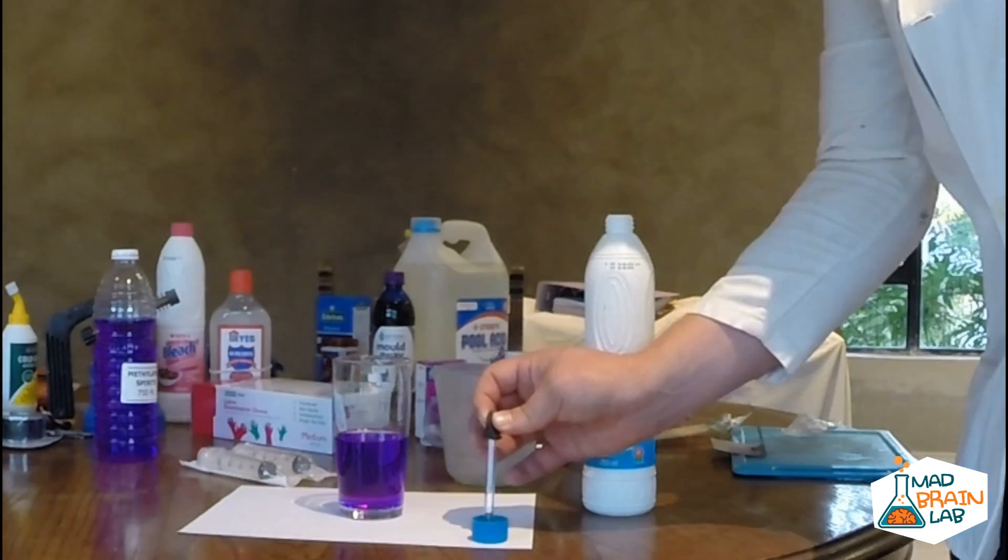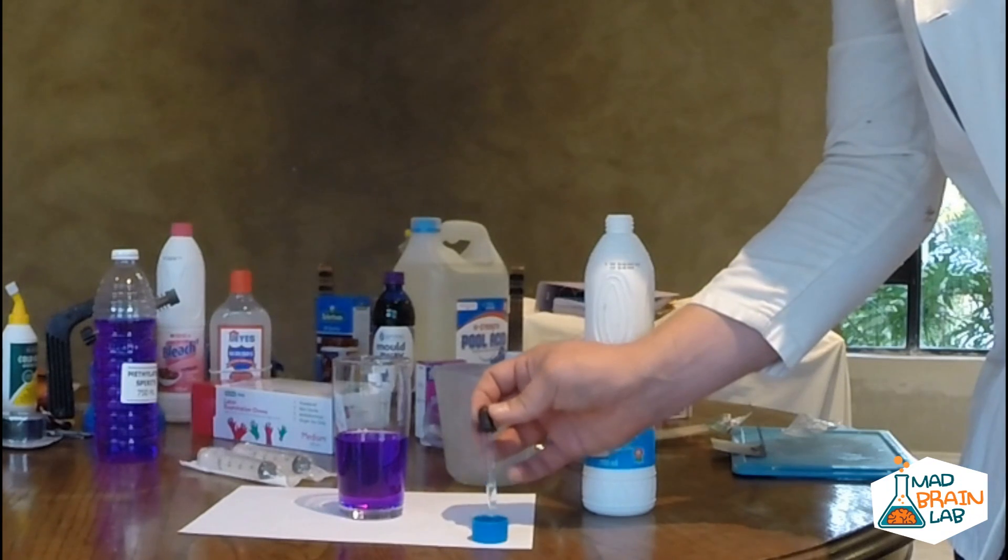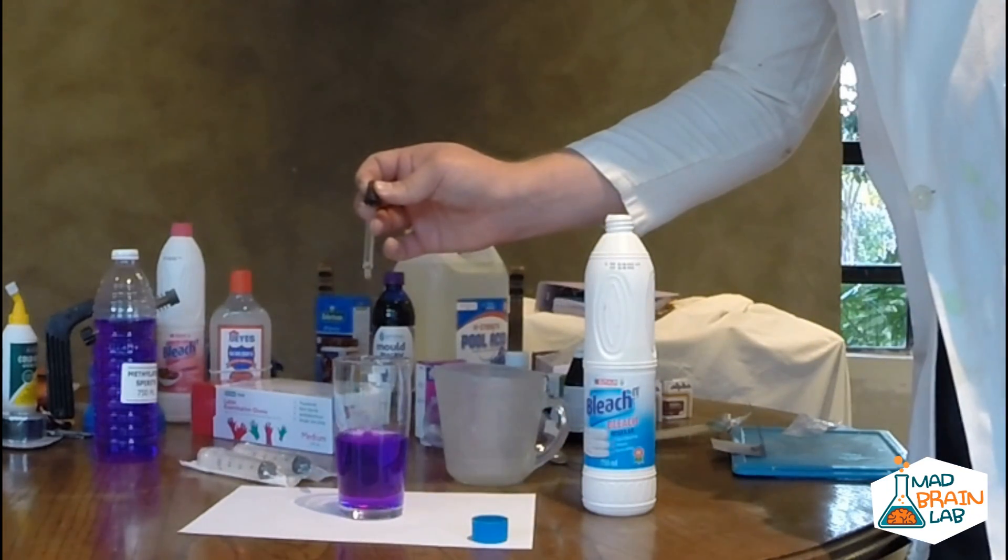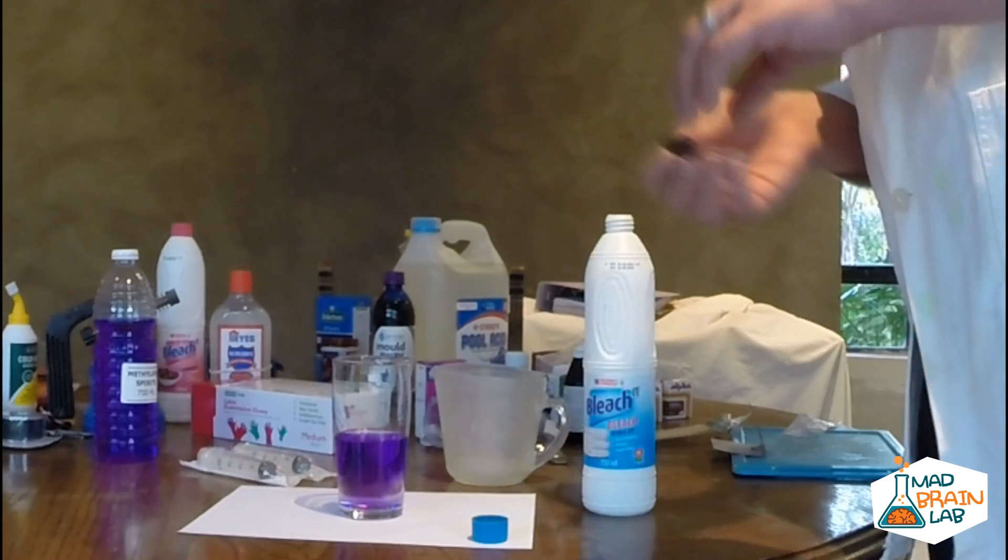Just another quick way to see the aggressive oxidative nature of chlorine is to eliminate the color of methylated spirits with a few drops of sodium hypochlorite.